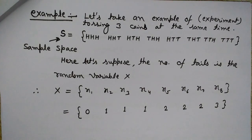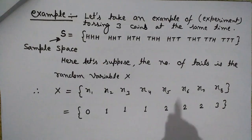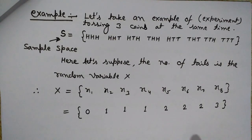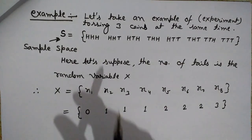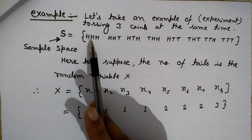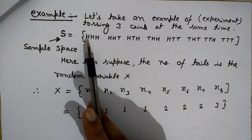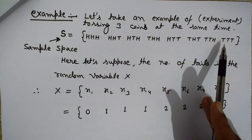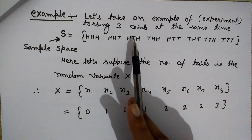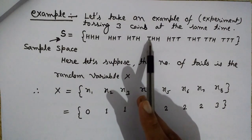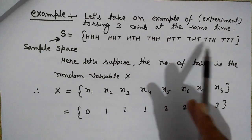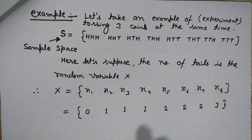We will understand it with the help of an interesting example. Here we are tossing three coins simultaneously. Then the sample space would be the range of all the possible outcomes. We may have three heads, three tails, two heads and one tail, or other arrangements. So there are total eight outcomes.